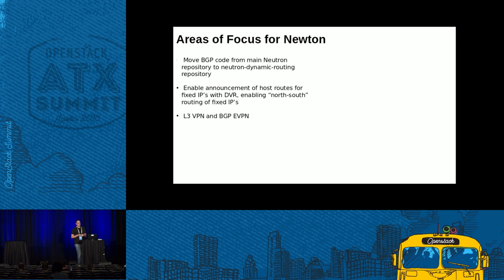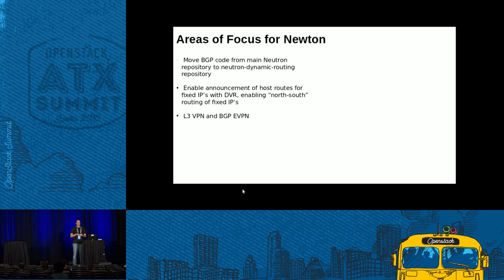The next place we'd like to go is to use BGP to configure L3VPN and use EVPN technology. We're still hashing out what that looks like and I expect a blueprint to show up shortly that we'll start iterating on. Those are our areas of focus for Newton.